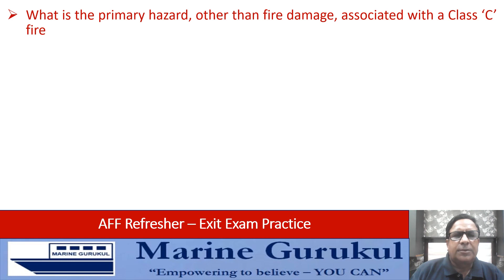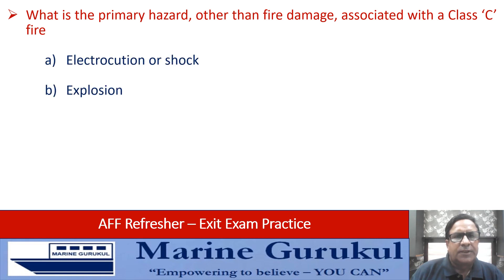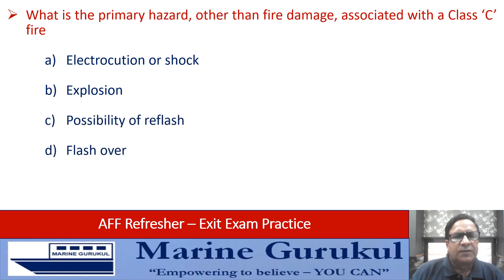Which is the primary hazard other than fire damage associated with a Class C fire? The answer is electrocution or shock, because Class C fires are electrical fires and the primary hazard is electrocution.